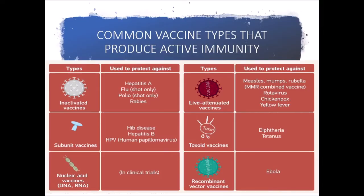Some common vaccine types that we use to produce active immunity would be inactivated vaccines. These are used to protect against things like hepatitis A, flu, polio, or rabies. Obviously, rabies and flu are ones that we use within our own animals.